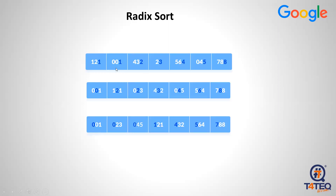For example, digits at unit place: 1, 1, 3. Next: 1, 3, 3, 4, 5, 6, 7, 8. Then tens place: 5, 6, 8. This is how you process each digit position in Radix Sort.